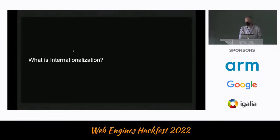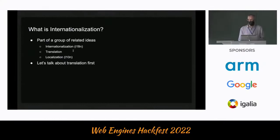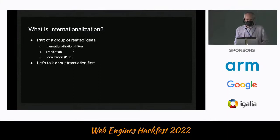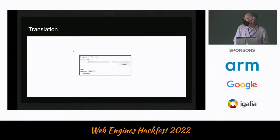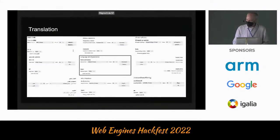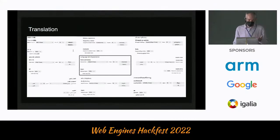First, what is internationalization? It's really part of a group of related ideas: internationalization, translation, localization. It's easiest to talk about translation first because it's probably the thing we all have a good idea of. Here's a dialogue from Firefox in English and there it is in a bunch of other languages — that's more or less what translation is. It's not necessarily easy but at least the idea is easy to understand.